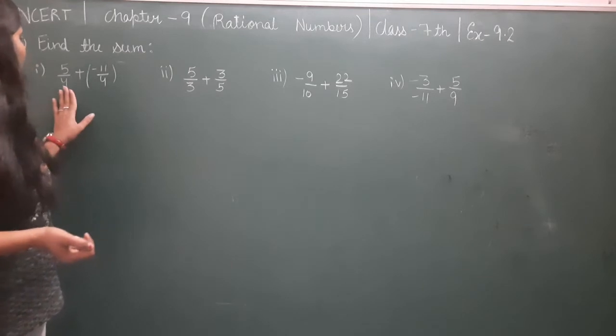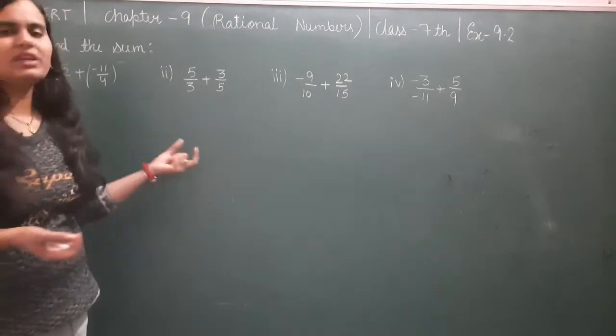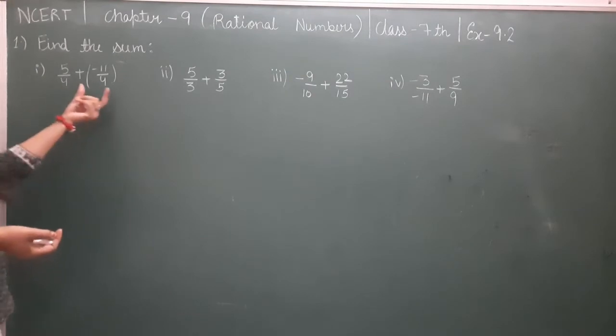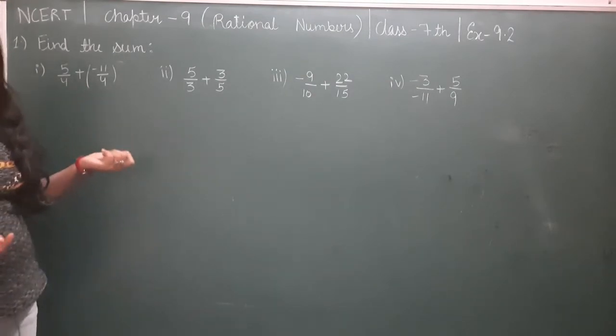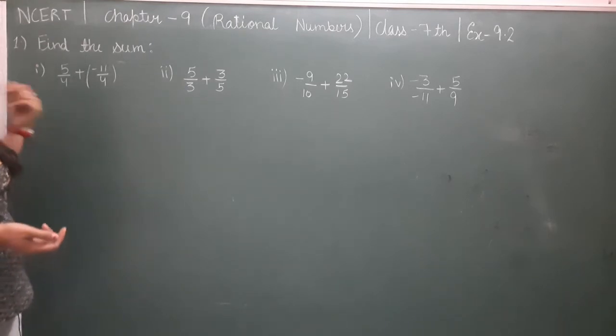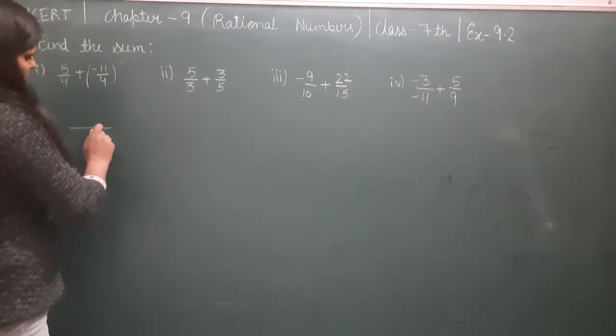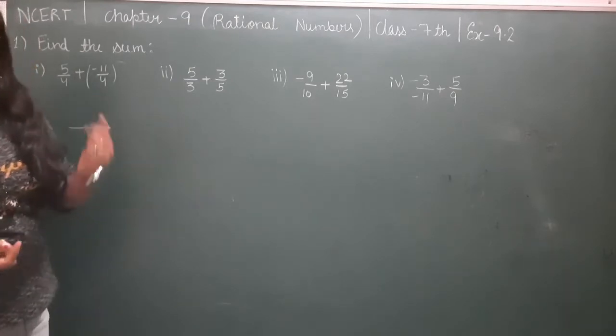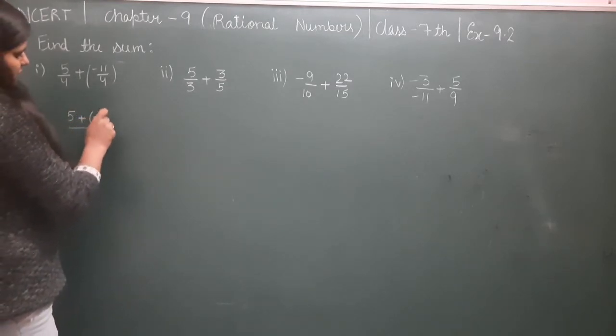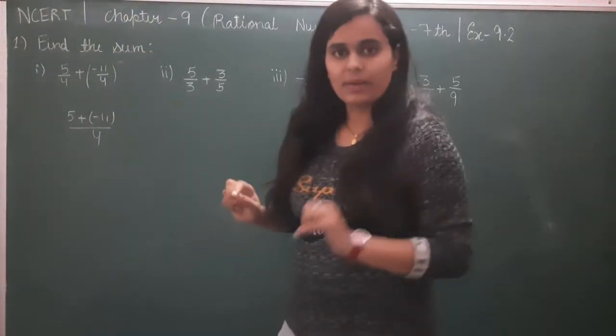Now come to the question. First is 5/4 plus minus 11/4. When adding rational numbers, denominators are the same, so we take the LCM. Here the LCM is already the same, both denominators are 4. You can keep the denominator same or take LCM - I'll teach you both methods. Since they're already same, we keep denominator as 4 and only add the numerators.